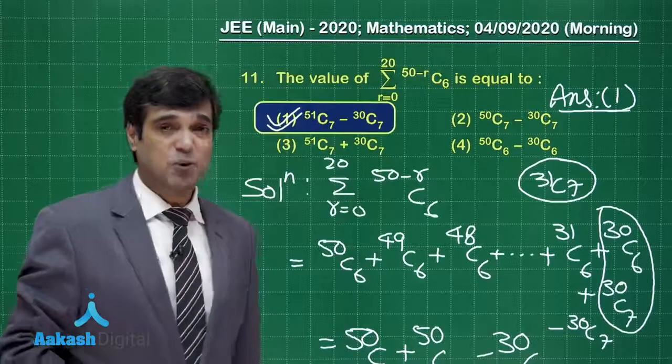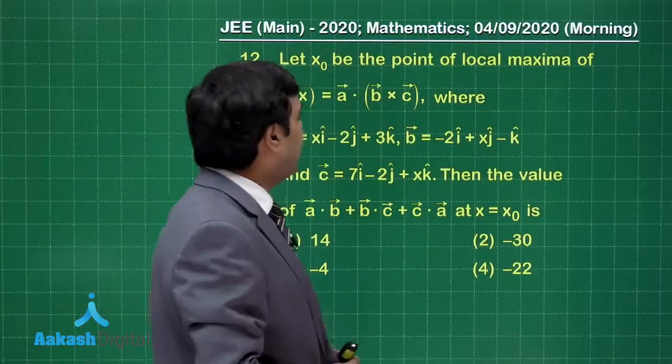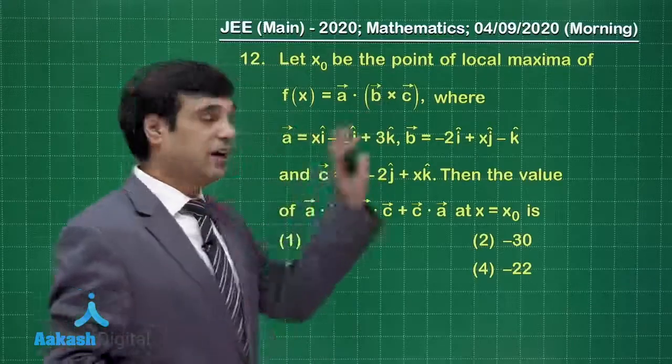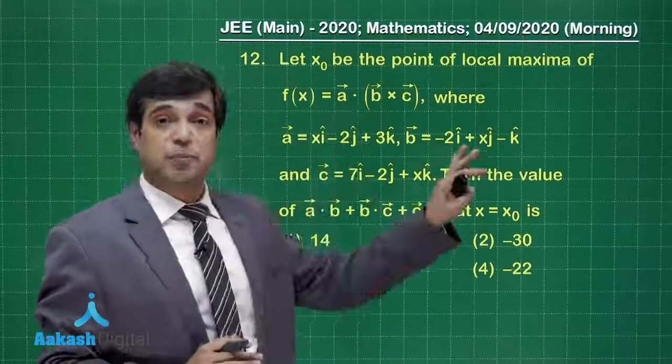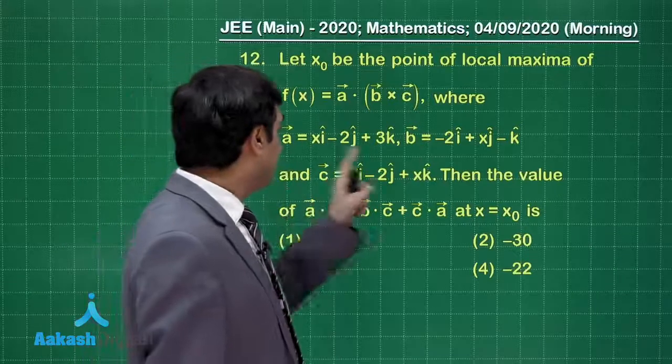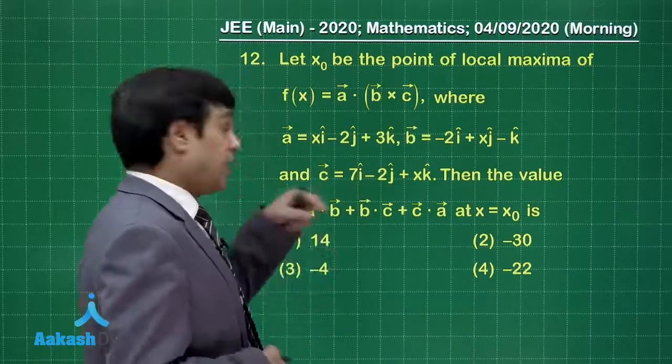Time to take up the next question now. Let x naught be the point of local maxima for the function involving vectors, that is scalar triple product a b c involving unknown x, so that we can get the function.